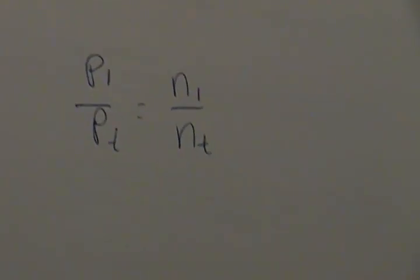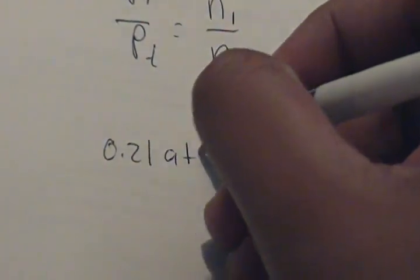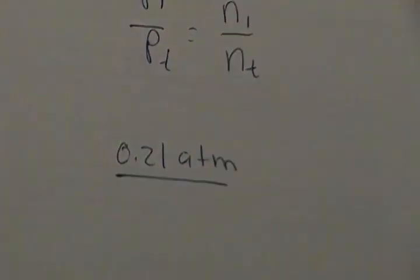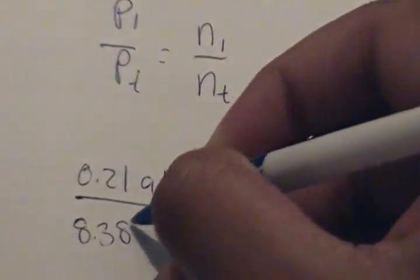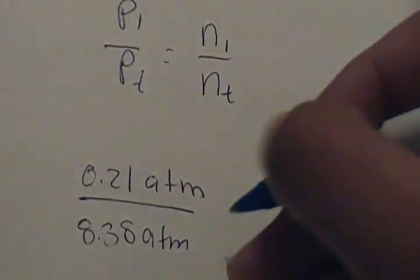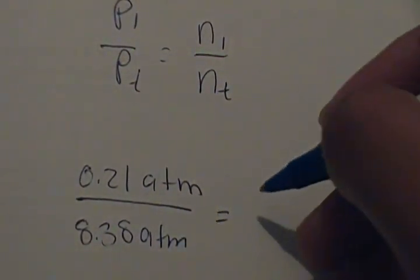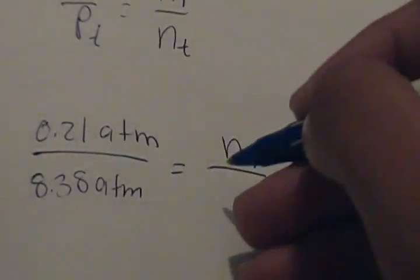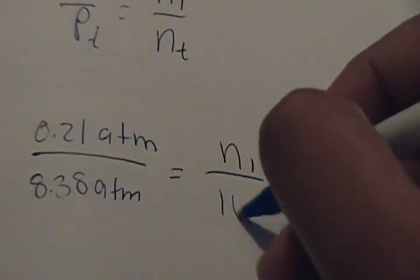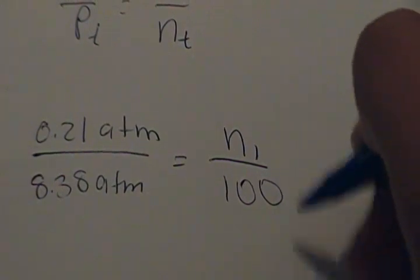So our p1 would be 0.21 atm, and our pt would be 8.38 atm. And the number of moles, we don't know that. And for the total number of moles, let's say 100, because it's a percent.